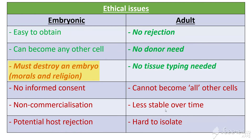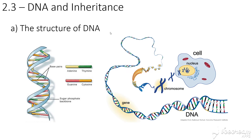Adult stem cells are also a little less stable over time and harder to isolate compared to embryonic stem cells. That covers all the pros, cons, and ethical issues surrounding the use of stem cells for treatment and disease. That's the end of this video and this topic — it's quite a short one. Next time we'll be moving on to DNA and inheritance. There is some overlap between these topics, so I'd recommend also watching the 2.3 spec videos, which go through DNA structure in more detail.